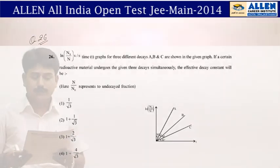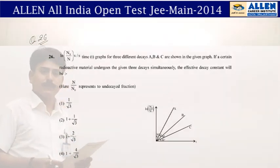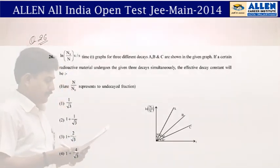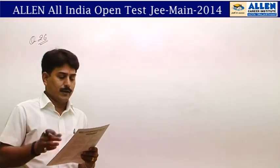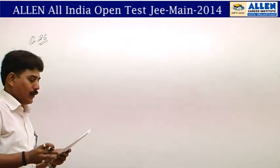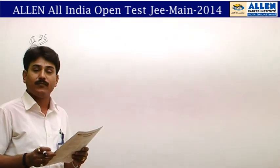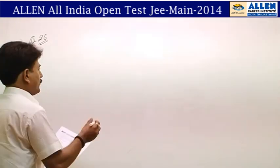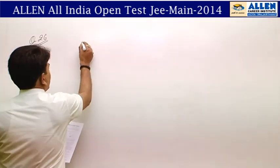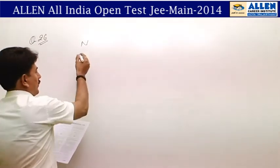Here is question number 26 of the All India Open Online Test — a very good, knowledge-based question. We are shown a ln(N₀/N) versus time t graph for three different decays A, B, and C. First of all, let us understand what this ln(N₀/N) vs t graph represents.